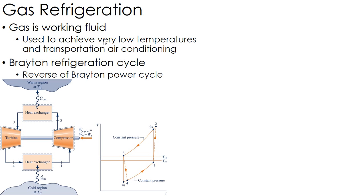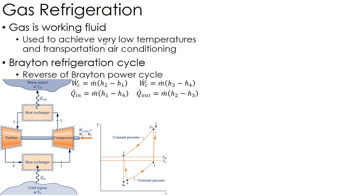This is really just reversing the Brayton cycle. Rather than going through a compressor, then heat addition, then a turbine to get work out — you just reverse that. You go to the compressor, take heat out of it, throw it through the turbine, and then you've got very very cold output. Work and heat transfers are again just Delta H's — it's just reversing the cycle.